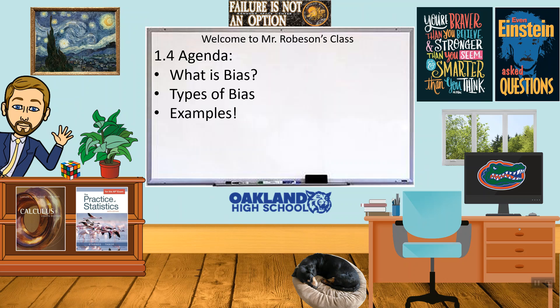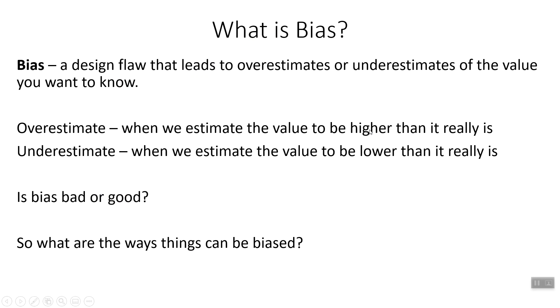Hey, welcome to Statistics with Mr. Robeson. Today we are going to go over bias. So what is bias? We're going to go over our six types of bias, then take a look at some examples. Bias is some sort of design flaw that leads to overestimates or underestimates of the value that you want to know.